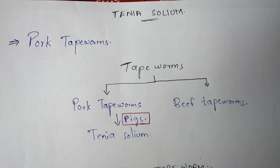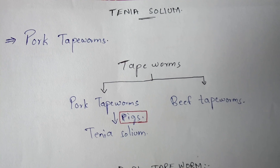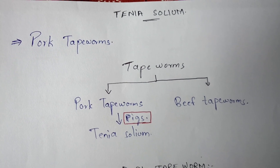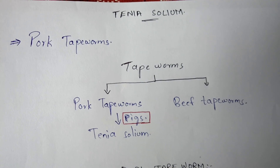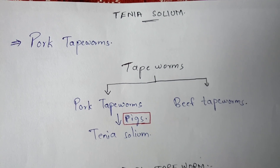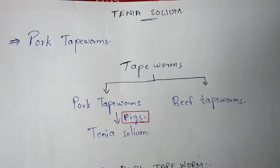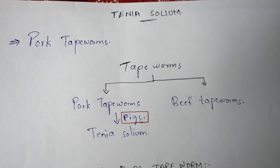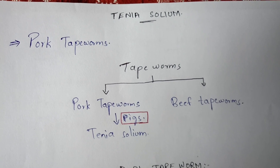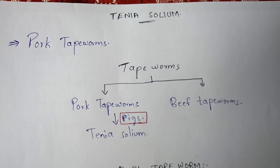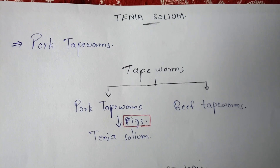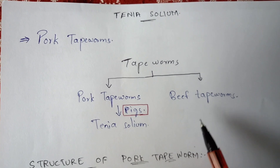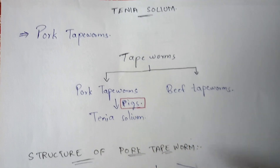Tapeworms are mainly of two types: pork tapeworm and beef tapeworm. Taenia solium disease is mainly caused by pork tapeworms, which are mainly present in pigs. Beef tapeworms are mainly present in cows and cause a different type of disease — as the name indicates, beef means cow, so it is named beef tapeworm.